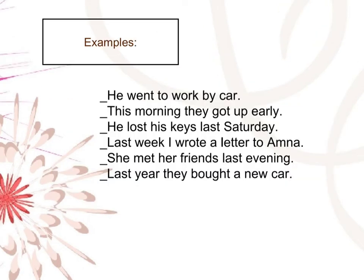Examples of irregular verbs: 'He went to work by car.' 'This morning they got up early.' 'He lost his keys last Saturday.' 'Last week I wrote a letter to Amna.' 'She met her friends last evening.' 'Last year they bought a new car.'